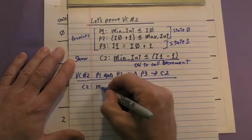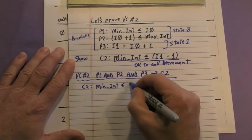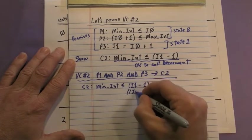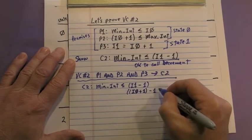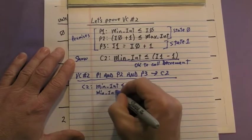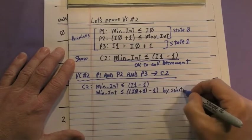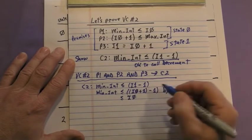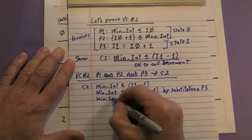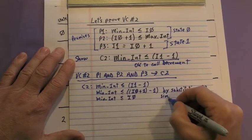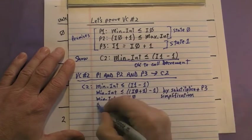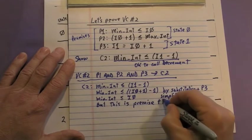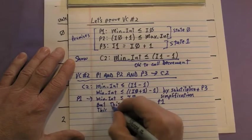Now the proof. We write down C2, which is min int is less than or equal to I1 minus 1. And we notice that I1 can be rewritten as I0 plus 1, so we do the substitution. But I0 plus 1 minus 1 is just I0 by simplification. This last step just simplified to premise P1, which means we've now shown conclusion C2.